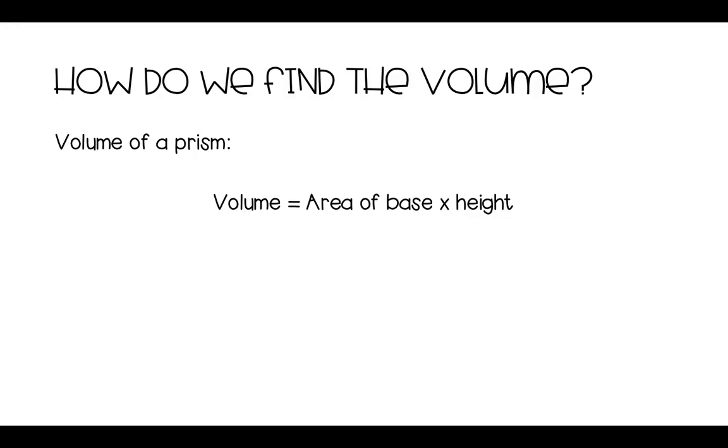And to find the volume of a prism, you take the area of one of the sides and multiply it by the height. Another way we say it is V equals A times H or V equals AH. This means exactly the same thing. This means area of the base times height.